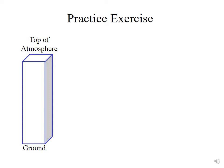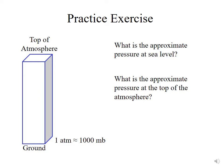Here's a practice exercise. What is the approximate pressure at sea level? In this case, it's one atmosphere. It's 1,000 millibars. Millibars is a hectopascal, so that would be equivalent to 100 kilopascals. What's the approximate pressure at the top of the atmosphere? Well, since there's no atmosphere above it, that has to be zero. So zero millibars, zero hectopascals, zero kilopascals.